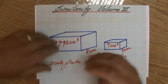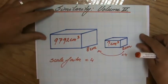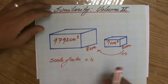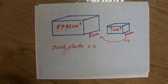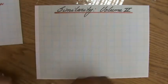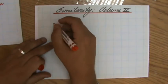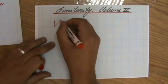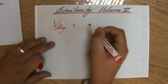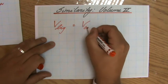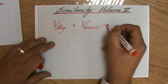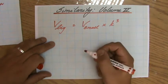As I showed in my previous video, with volume you have to look at the scale factor cubed. The volume of the big cuboid equals the volume of the small cuboid times the scale factor to the power 3.